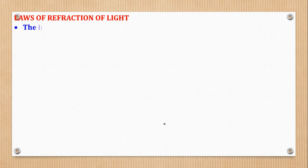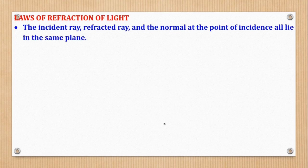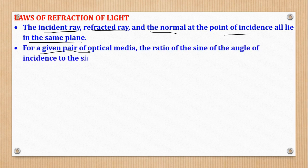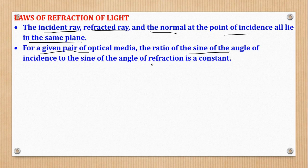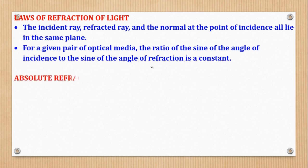There are two laws of refraction of light. One is that the incident ray, refracted ray, and the normal at the point of incidence all lie in the same plane. The other is that for a given pair of optical media, the ratio of sine of angle of incidence to sine of angle of refraction is a constant. We are not focused on the theory part, but we give enough theory to take us to the calculations. Full notes are available in the recommended books.